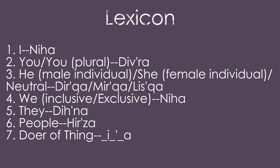He is dirka, she is mirka — these words are also the same as the words for a male or female individual. A person whose gender is neither male nor female — which describes many of the children who have not yet woven their metamorphosis parts — is liska. We is niha, same as I, because remember plurals are just the same word. They is dihna. People is hirza, from Shahirzani. Tu is na, at is it, in or on is tina, for or by or with is re, from is also ni, and and is ah.